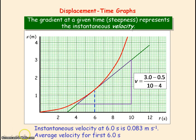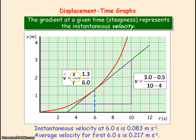However, if we need to obtain the average velocity for the first 6 seconds, we will use the change in displacement divided by the time. So in the first 6 seconds, the change in displacement is 1.3, so that gives you an average velocity of 0.217 metres per second.